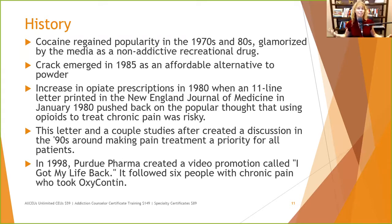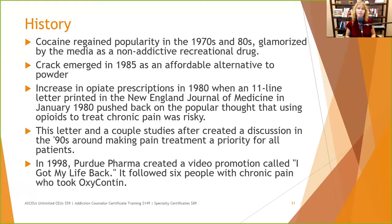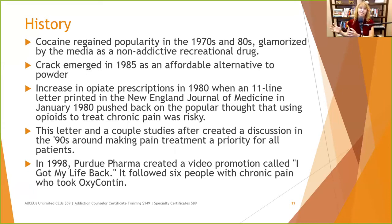Cocaine was the thing to do back then and it gained more popularity, but it was still expensive because they were having to import it. So in 1985, crack emerged as an affordable alternative to pure powder cocaine — crack is cocaine plus baking soda, basically. Then we start with the problem of opiates flaring again in 1980, when an 11-line letter printed in the New England Journal of Medicine pushed back on the popular thought that using opioids to treat chronic pain was risky. Crack was relatively easily manufactured once you got the cocaine into the United States.